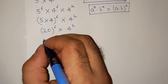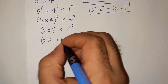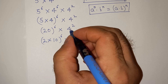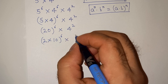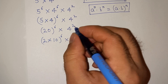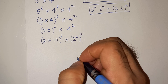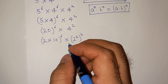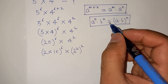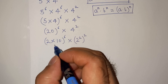Now, 5 multiplied by 4 is 20, so we have 20 power 6 multiplied by 4 square. Further, 20 can be written as 2 multiplied 10, so this becomes (2 multiplied 10) power 6 multiplied by 4, and 4 can be written as 2 square, so we have (2 square) power 2.